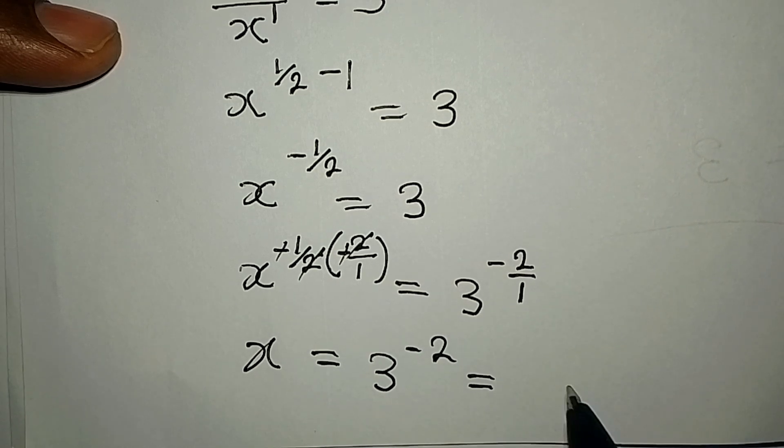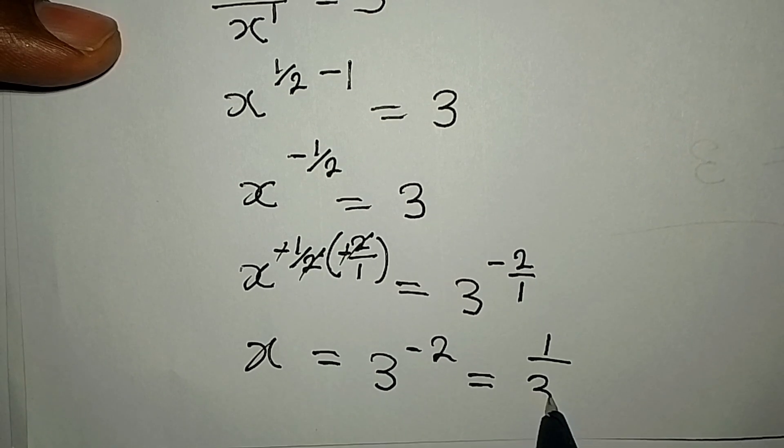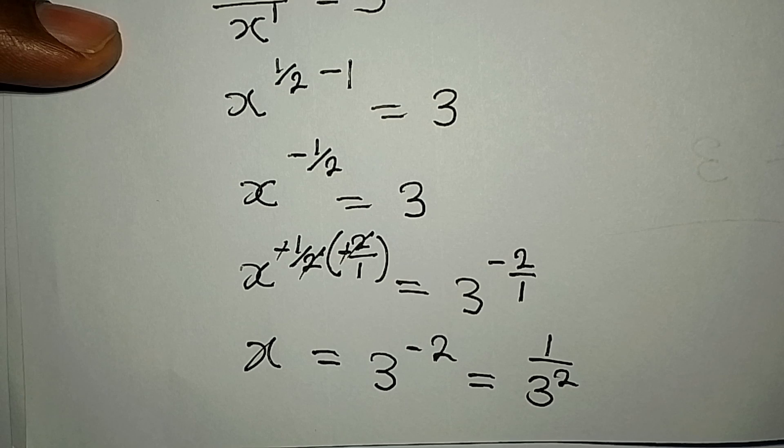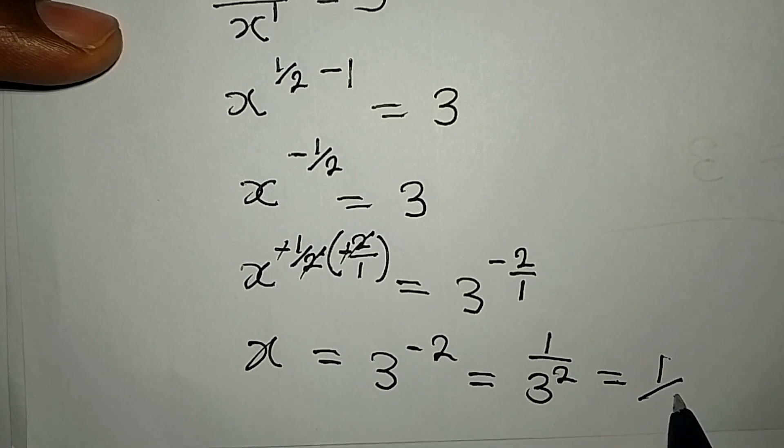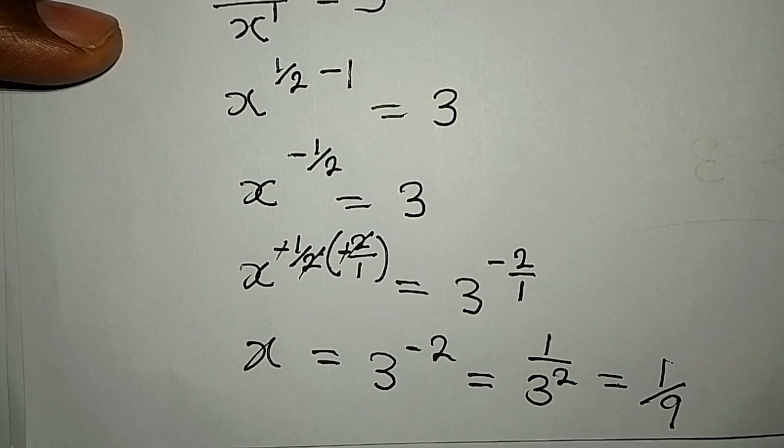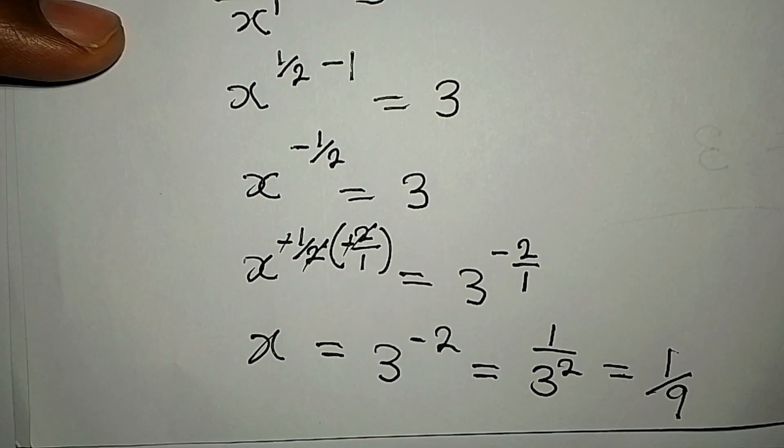And 3 to the power of negative two is the same as one over 3 to the power of two—the negative has gone—and then this is the same as one over nine. From the first method we got two solutions.